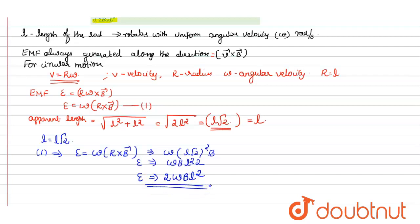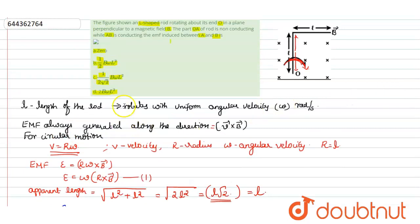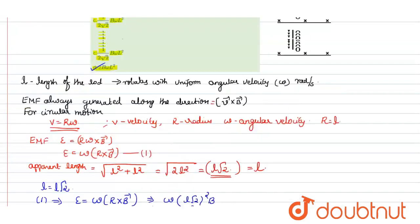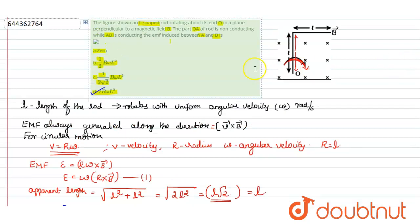This is the equation to calculate the EMF. Checking the options, option D matches the answer: 2 B omega l squared. So option D is correct. I hope this answered your question, thank you.